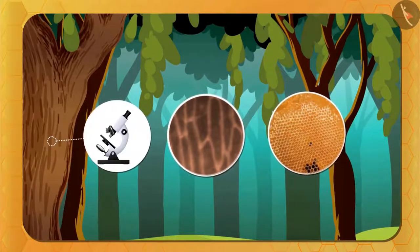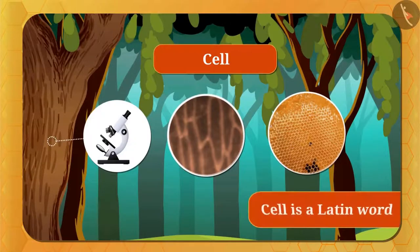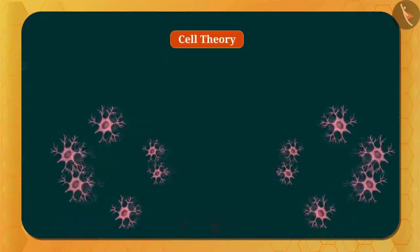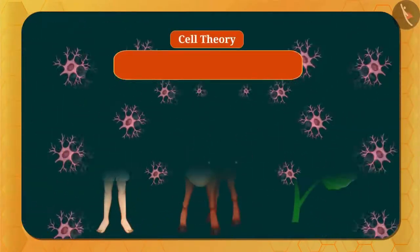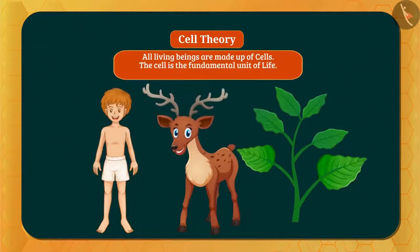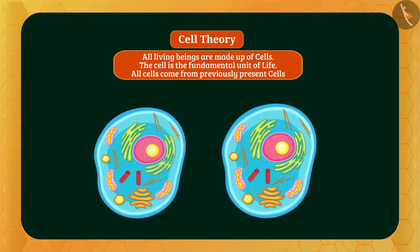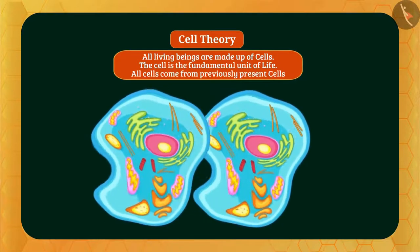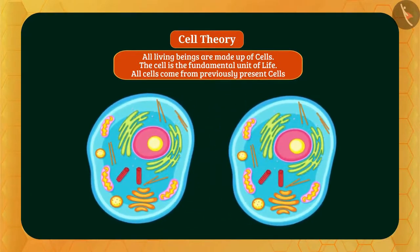He called these blocks a cell. 'Cell' is a Latin word meaning small room or compartment. In this way, Robert Hooke discovered the cell. After further research, it was found that all living beings are made up of cells, the cell is the fundamental unit of life, and all cells come from previously present cells — that is, a cell divides and forms two new cells. These are the postulates of cell theory.